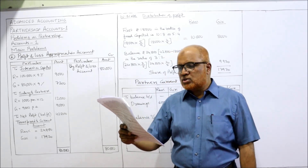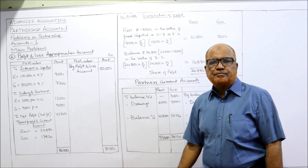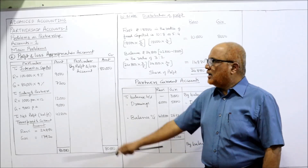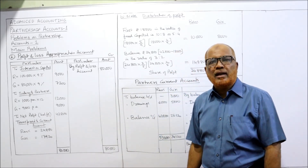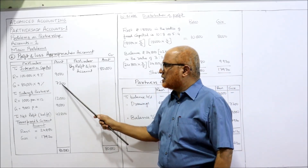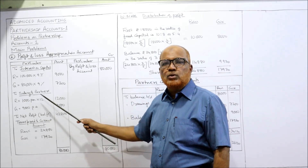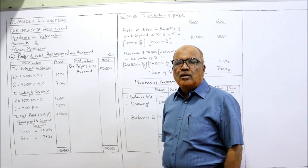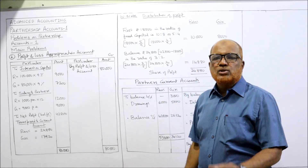Ravi is having a credit balance whereas Giri is having a debit balance. You are required to prepare the profit and loss appropriation account and current accounts of Ravi and Giri. On the credit side of the appropriation account, the profit before adjustments is eighty thousand, coming from the profit and loss account. On the debit side, interest on capital: fixed capitals are one lakh and eighty thousand, rate is nine percent. One lakh into nine percent gives nine thousand for Ravi, and nine percent of eighty thousand gives seven thousand two hundred for Giri. Salary to partners: Ravi is one thousand per month into twelve, giving twelve thousand; Giri is nine thousand per annum, so directly nine thousand.